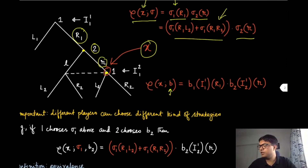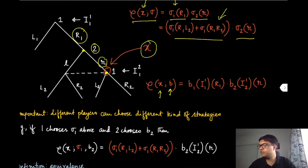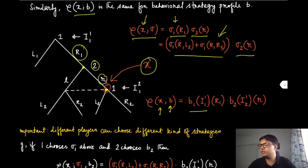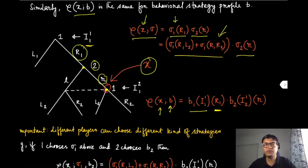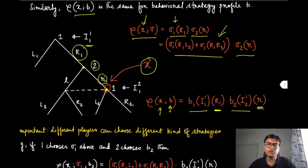Under the behavioral strategy, the probability of reaching the same node x is much easier to express: it is b1(i11)(r1) — the behavioral strategy at information set i11 choosing r1 — multiplied by the behavioral strategy of player two choosing r. When we talk about equivalence, these two probabilities should naturally be equal.